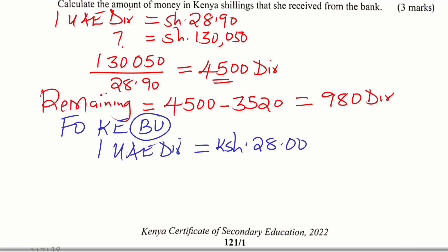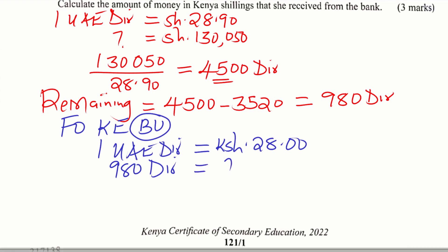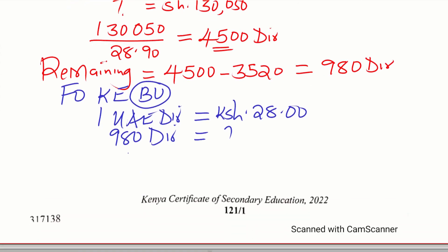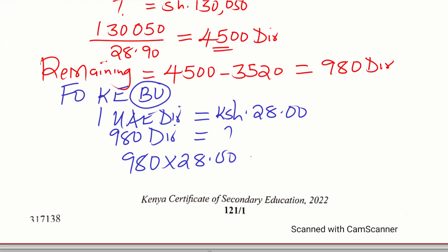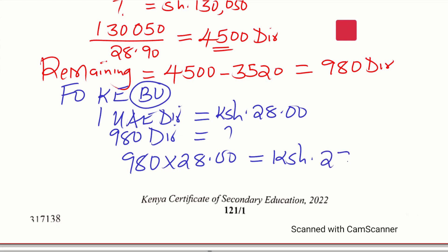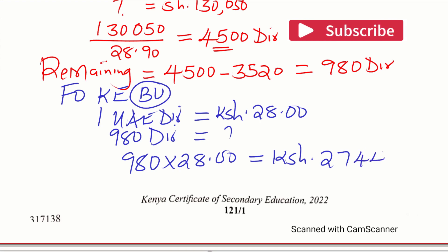Looking at 16th of August in the buy column, the rate is 28.00 Kenyan shillings per UAE dirham. For 980 dirhams, we do a direct multiplication: 980 multiplied by 28.00. Working this out on a calculator gives 27,440 Kenyan shillings — that is the amount she received from the bank.